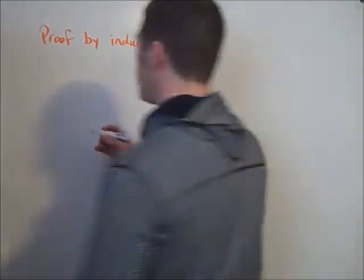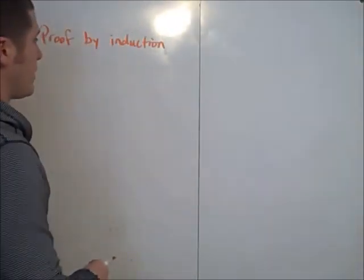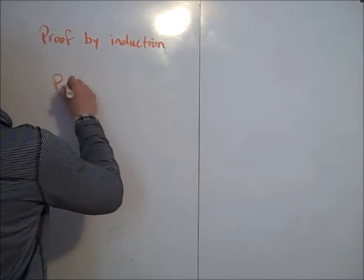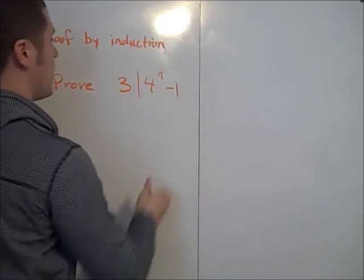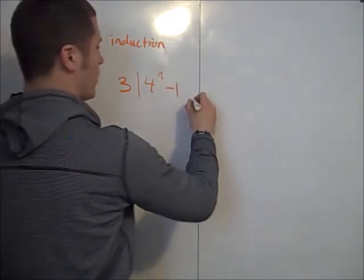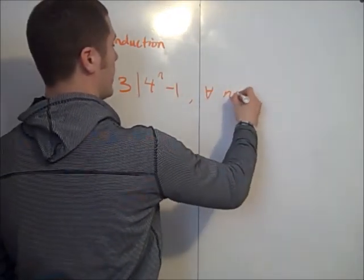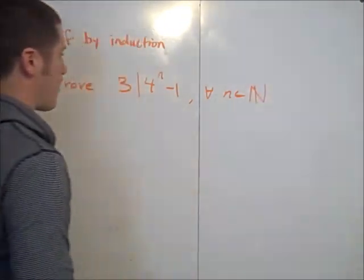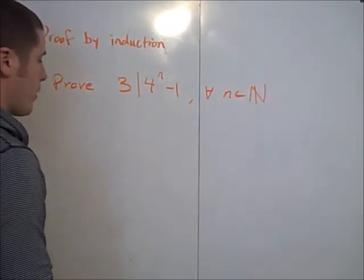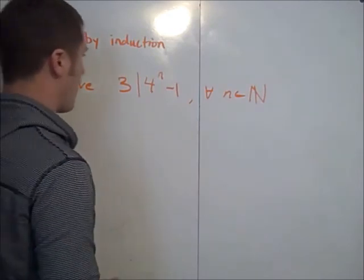So what we're going to do is prove a divisibility statement. We're going to prove that 3 divides 4 to the n minus 1 for all natural numbers n. So for all n that are elements of the natural numbers, we're going to do this by induction.